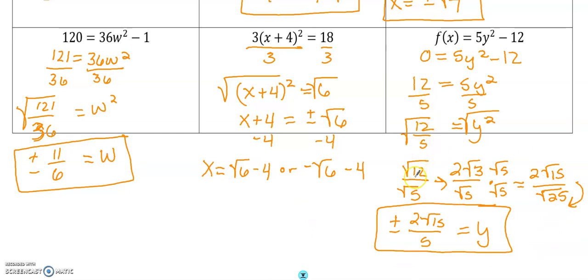Now, I did a lot of work at the end here because I don't know if you remembered this. When you break your fraction into two radicals top and bottom, you can't have a radical in the denominator.